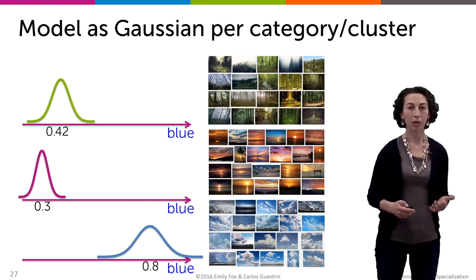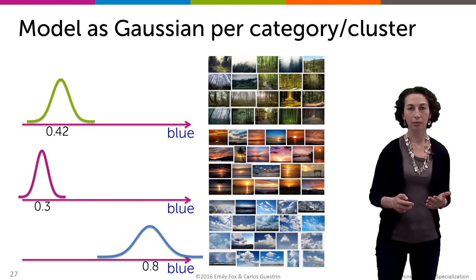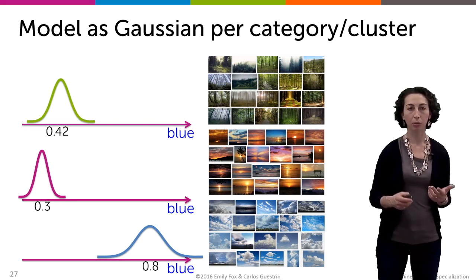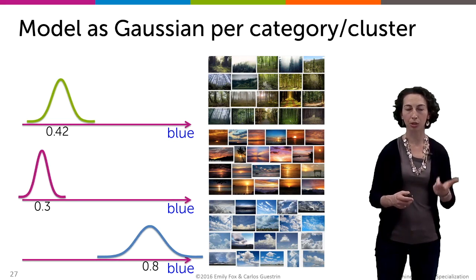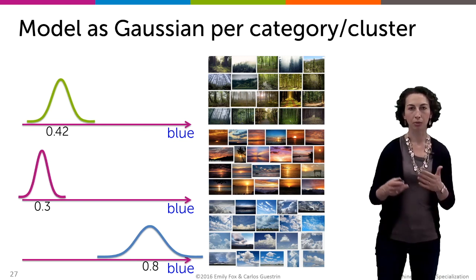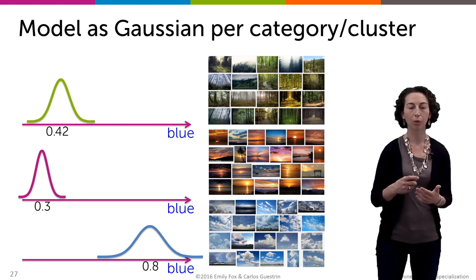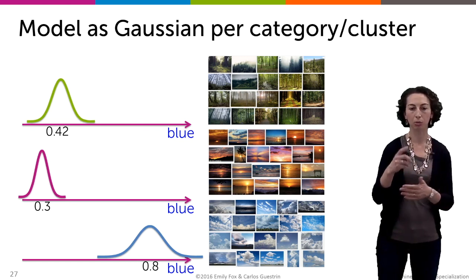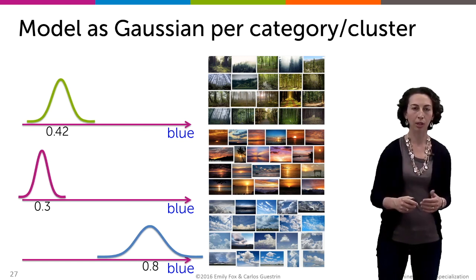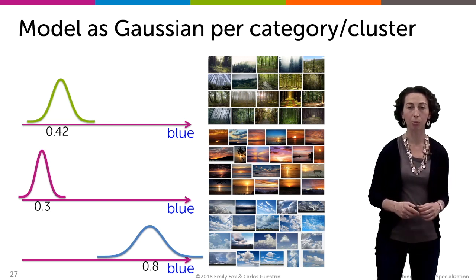Remember that for any one of our image categories and for any dimension of our observed vector, like the blue intensity in that image, we're going to assume a Gaussian distribution to model that random variable. So for example, for forest images, if we just look at the blue intensity, then we might have a Gaussian distribution shown with the green curve here, which is centered about this value 0.42.